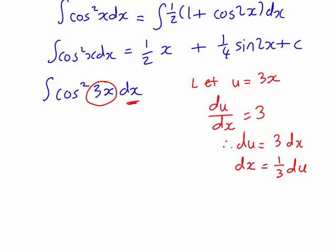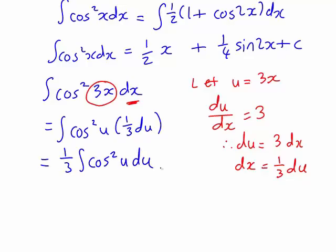Therefore, the integral of cos squared 3x dx is the integral of cos squared u, one third du when we're substituting those in. And that's just one third times the integral of cos squared u with respect to u. But we know that if the integral of cos squared x dx is a half x plus a quarter sine 2x plus c, then a third times the integral of cos squared u du must be a third of a half u plus one quarter sine 2u. And then that's all plus a constant.